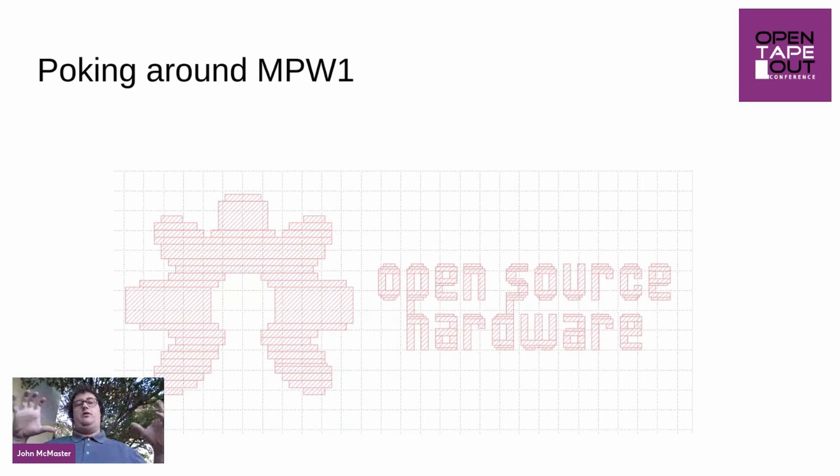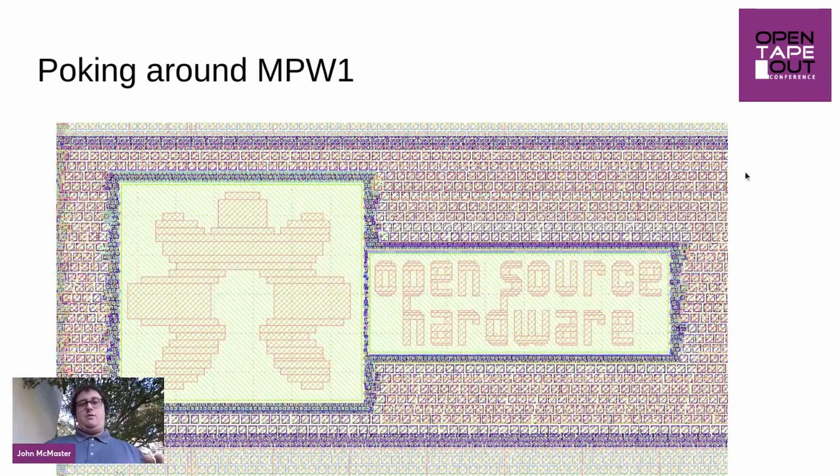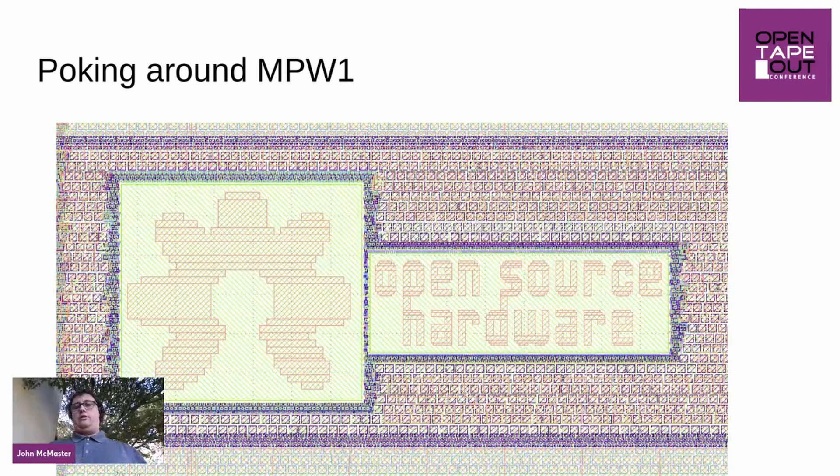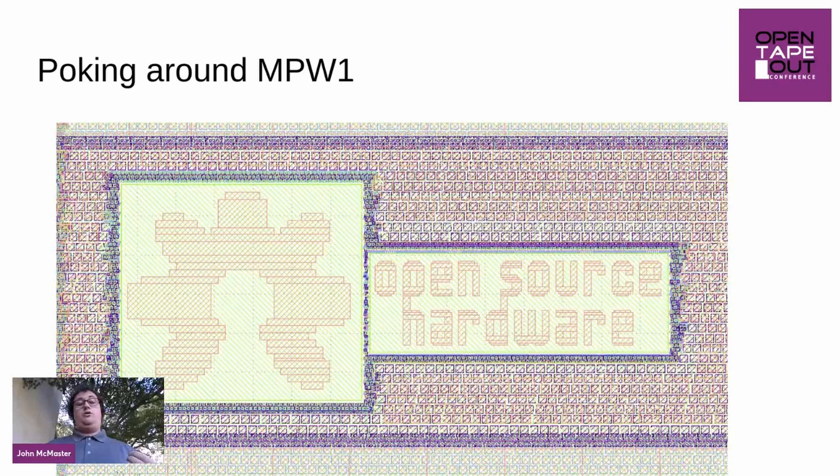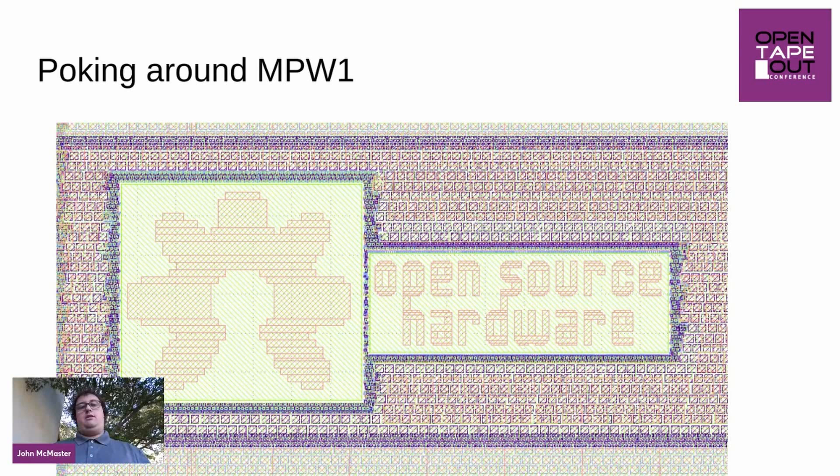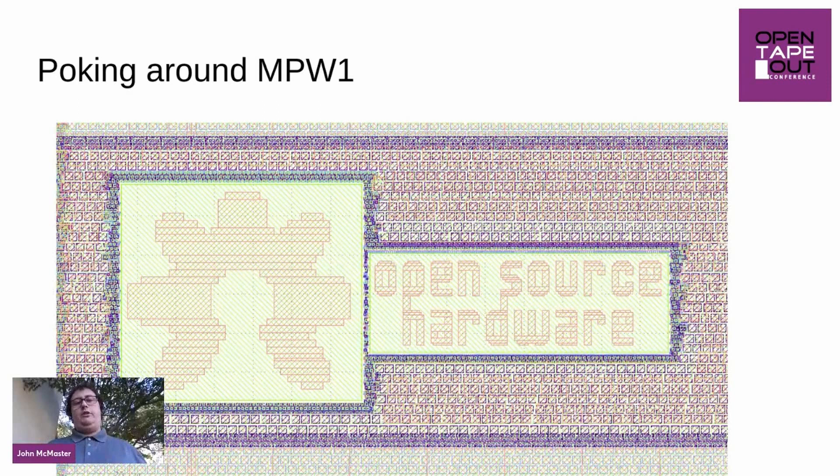The first thing I was really excited about was taking a look at logos. I'm a big fan of die art, doodling on chips, make the process exciting. Here is K layout, I brought up the open source hardware logo. You can see this is implemented on one of the metal layers. If you add a little bit more of the layers around it, now we have some of the CMP fill here.